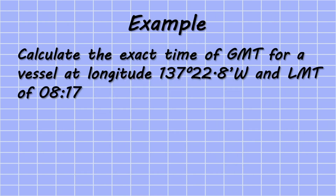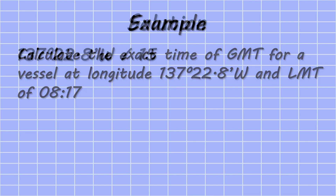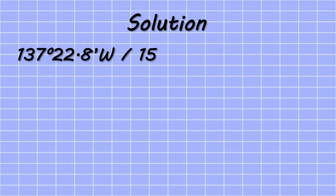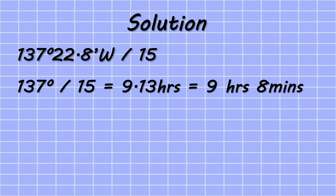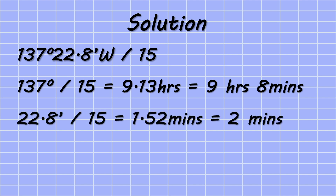Here is an example question to allow us to practice the new theory we have just learned. To calculate arc to time using calculation, we must divide our longitude by 15. Beginning with the degree value: 137 degrees divided by 15 gives us 9.13 hours, which if we convert to hours and minutes gives us 9 hours and 8 minutes.